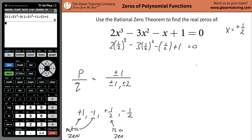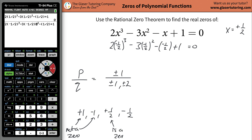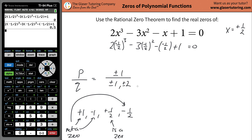We should expect the function to cross the X axis at positive one half. Now test negative one half — just make each of those values negative. Use second insert on the calculator to insert a negative sign and shift everything. Hit enter — it doesn't work out to be zero, so negative one half is also not a real zero. So it looks like there's only one rational real zero of this function.